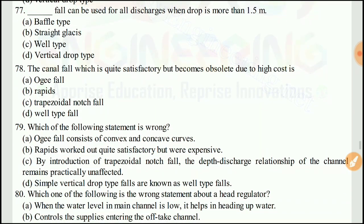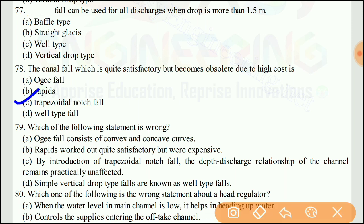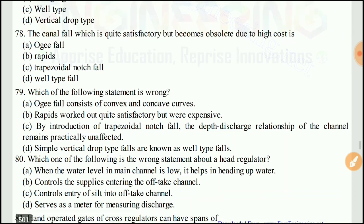Question 78: The canal fall which is quite satisfactory but became obsolete due to high cost — the right answer would be B, the rapid fall.